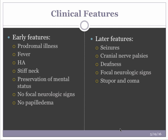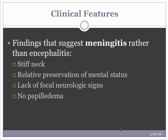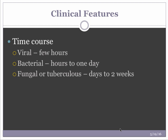Later features of meningitis include seizures, cranial nerve palsies, death, focal neurologic signs and symptoms, and eventually stupor and coma. Clinical features that suggest meningitis rather than encephalitis — which may come up on a test — include stiff neck, relative preservation of mental status, lack of focal neurologic signs, and no papilledema. Time course: viral meningitis develops acutely over a few hours, bacterial over hours to a day, and fungal or TB meningitis over several days to two weeks.